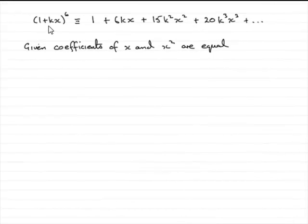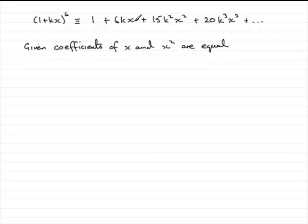Now this part: we've already got the expansion of (1 + kx) to the power 6, and we're told that the coefficients of x and x squared are equal, and we've got to find out what k is. So to do that, what are the coefficients of x? Well, the coefficient of x is 6k, and the coefficient of x squared is 15k squared. So if they're equal, we can simply say that 6k must equal 15k squared.